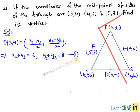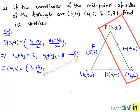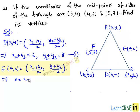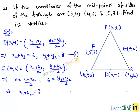The point E is the midpoint of AB. That is, E(4, 6) equals (x1+x2)/2, (y1+y2)/2. This implies, equating the x-coordinates, we get 4 = (x1+x2)/2, which implies x1 + x2 = 8, and y1 + y2 = 12. Let it be equation number 2.